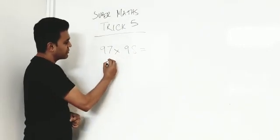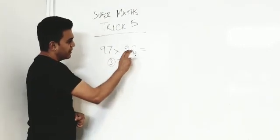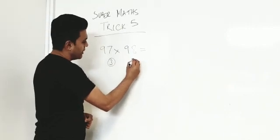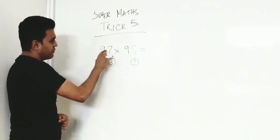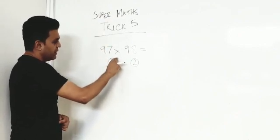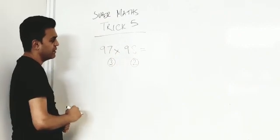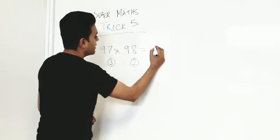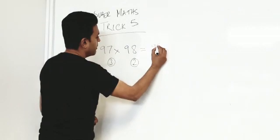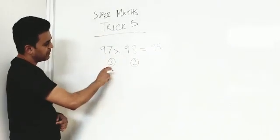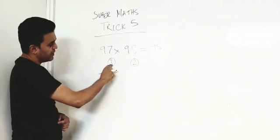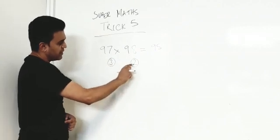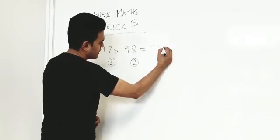97 is 3 away, 98 is 2 away. Now we take the 2 from 97 or the 3 from 98, it's the same number. What is that number? It's 95. Then we look at this number, what we were left down here, 3 and 2. We say 3 times 2 is 6, so we say 06.